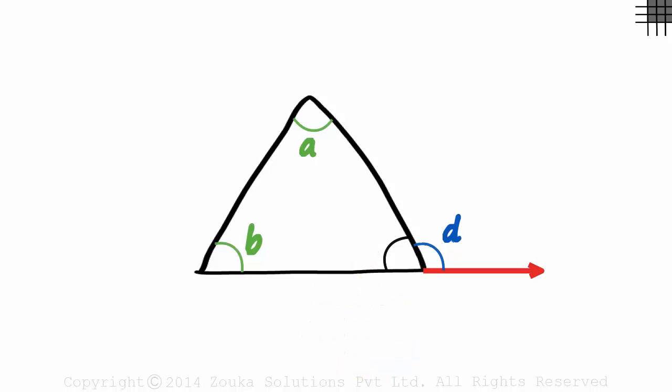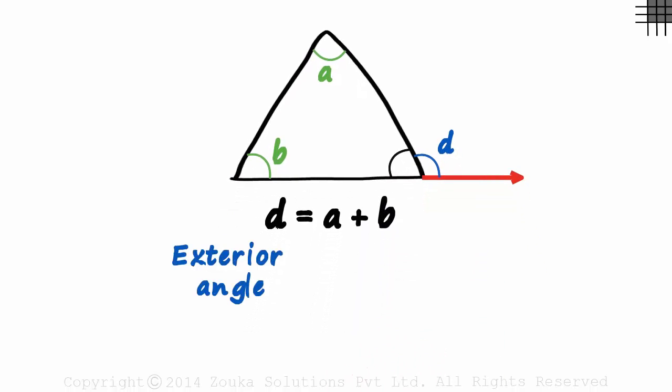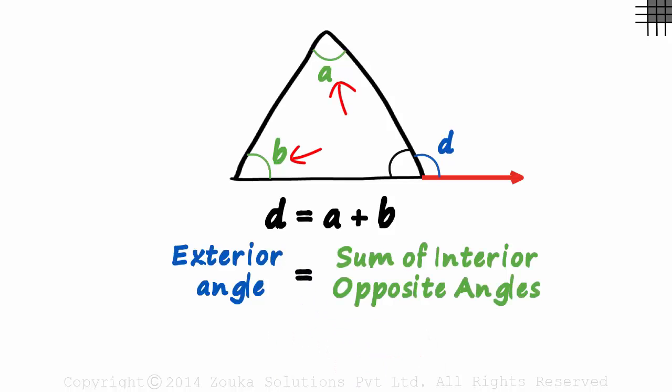The only concept we really need to understand here is the relation between the triangle's exterior and its interior angles. In this triangle, D will be the sum of A and B. Using words, we can say that the exterior angle will always equal the sum of its interior opposite angles.